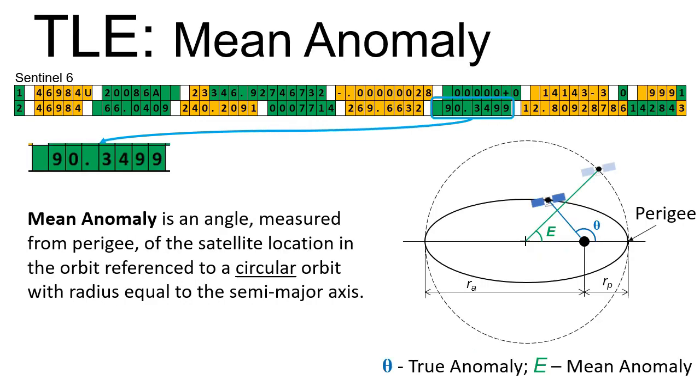Mean anomaly is an angle measured from perigee of the satellite location in the orbit referenced to a circular orbit with radius equal to the semi-major axis.